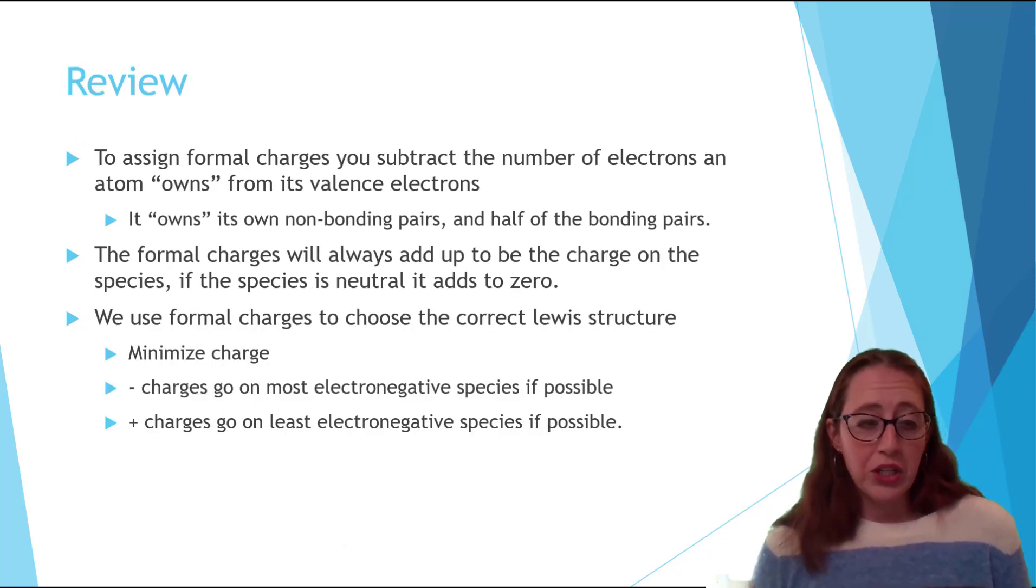In review, you should know how to assign formal charges for each atom within a molecule. You take the valence electrons and you subtract the electrons that the species owns in the molecule. The formal charges on each individual atom should always add up to be the total for the molecule. If there's no charge that means it's zero and so it should add up to be zero.